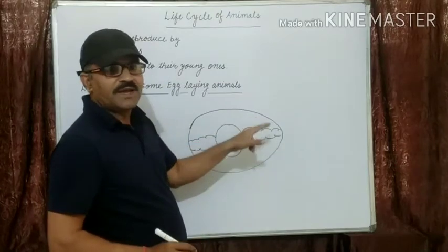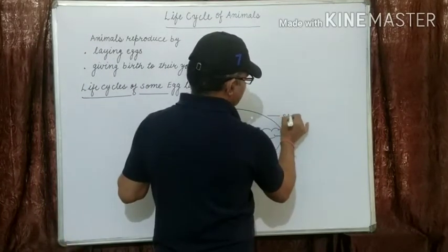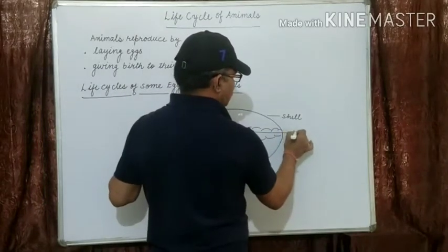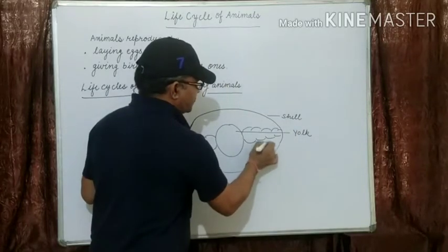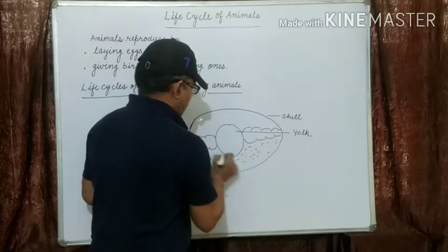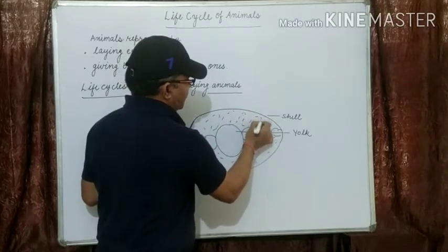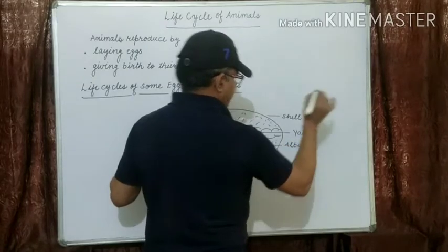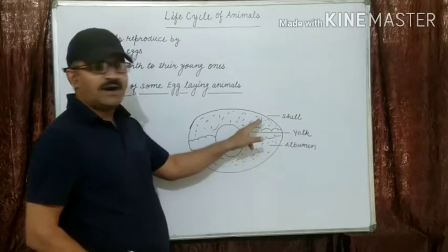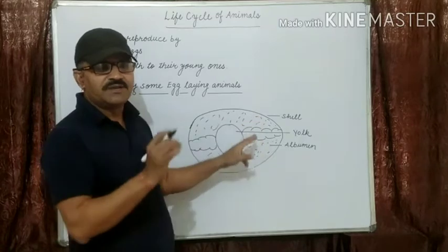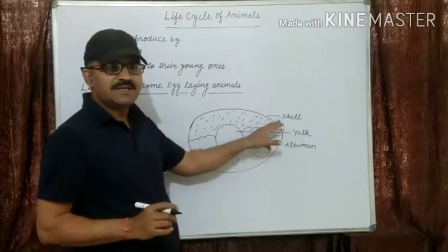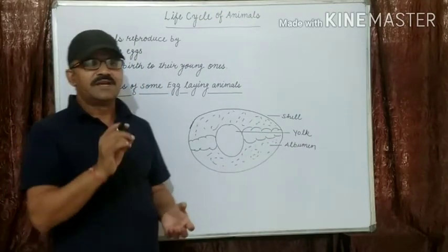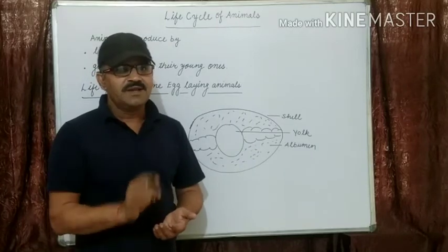The thin outer covering of the egg is called the shell. The yellow substance present inside the egg is known as the yolk. The white, jelly-like substance present inside the egg is known as albumin, or egg white.